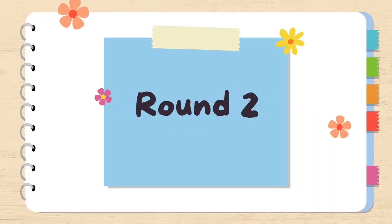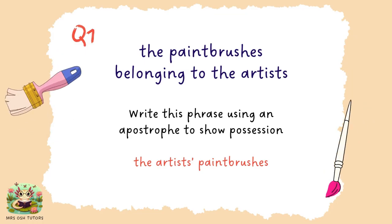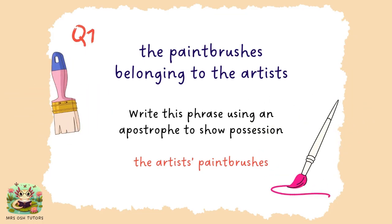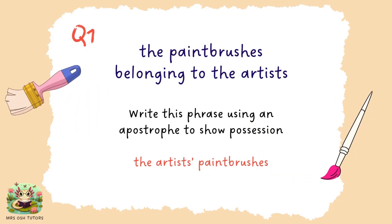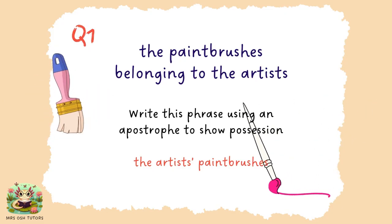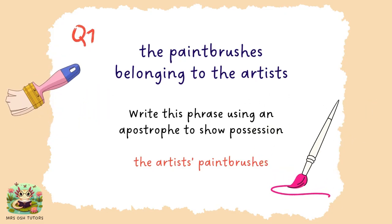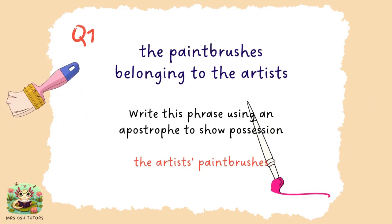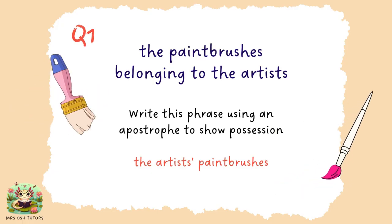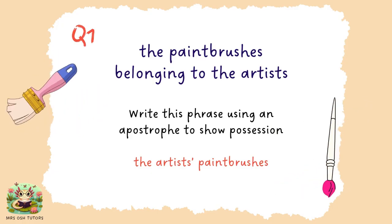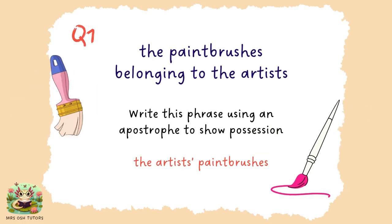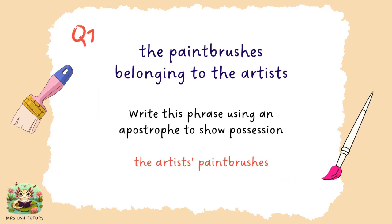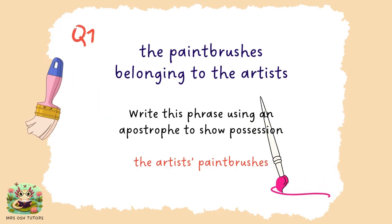That's the end of the last round — the answers are coming up. Question one. Hopefully you spotted that there was more than one artist, so the apostrophe for possession needs to go after the S. If you put an apostrophe before the S in 'artists,' you would be saying there was only one artist.